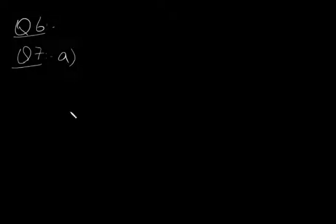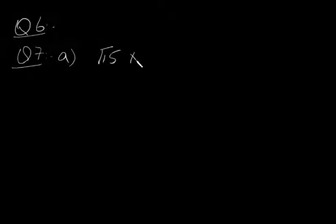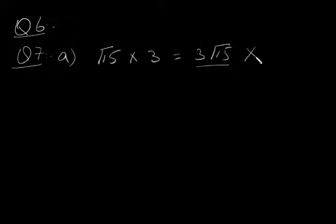In question 7 part A, it asks: is it possible to multiply a rational number and an irrational number to give an answer which is rational? For example, if you take a rational number like 15 and multiply by an irrational number like √3, you get √3 times 15, which still remains irrational. So the answer is no, it is not possible.